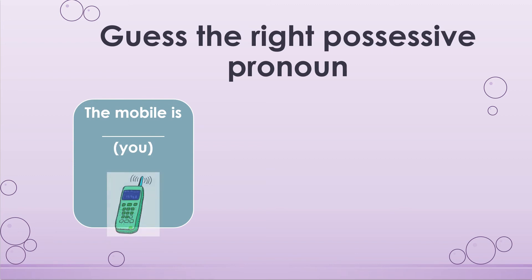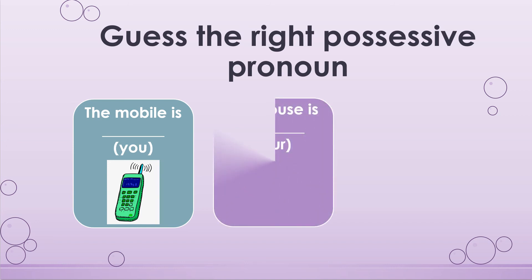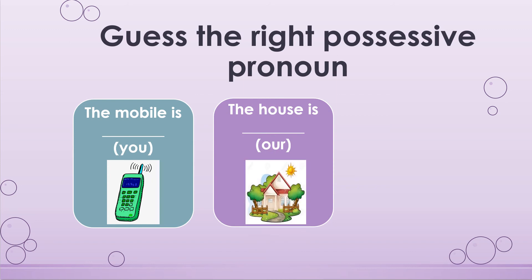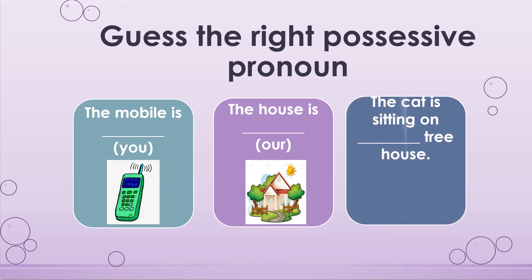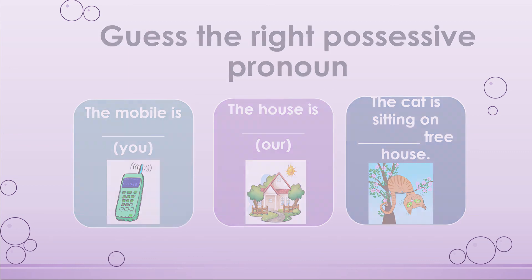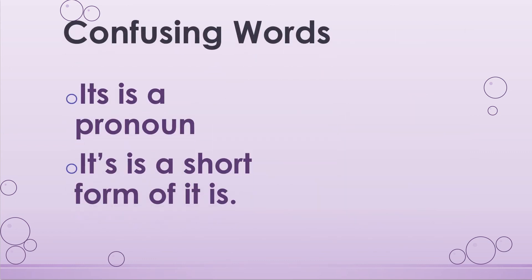Another example: 'The mobile is ___' — 'you' is the pronoun, which changes to the possessive pronoun 'yours', so 'The mobile is yours.' 'The house is ___' becomes 'The house is ours.' 'The cat is sitting on ___ tree house' — 'its tree house', where 'its' is a possessive pronoun.